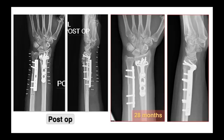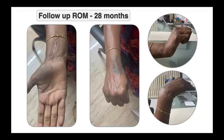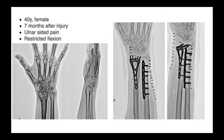Post-operative X-rays show excellent correction of all radiographic parameters. Follow-up X-rays at 28 months show adequate healing and maintenance of correction. Follow-up range of motion assessment also showed improvements in flexion and supination. Another 40-year-old female from our series presented 7 months after injury with complaints of ulnar-sided wrist pain and restricted flexion. She underwent correction using a similar technique, and post-operative and follow-up X-rays show excellent outcome with significant improvements in wrist range of motion.